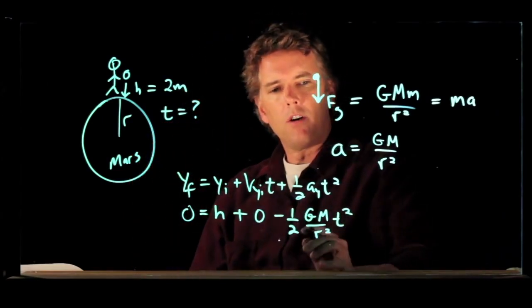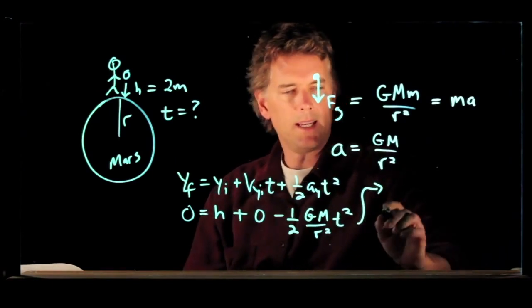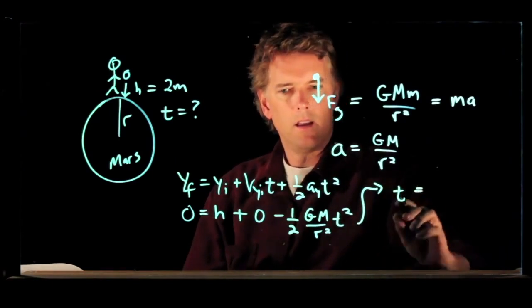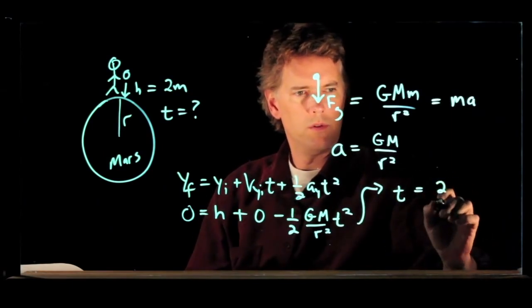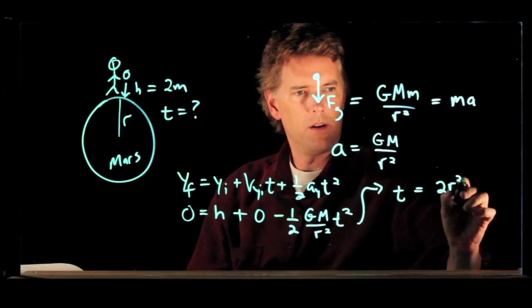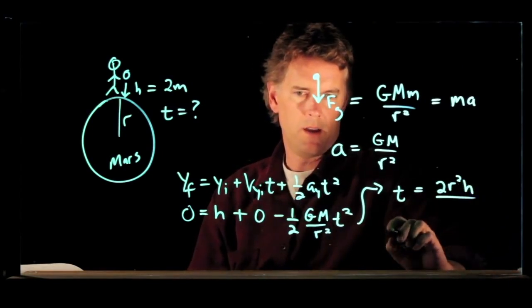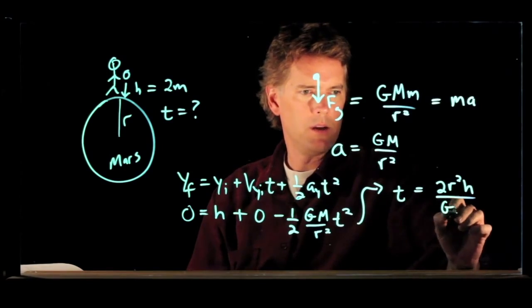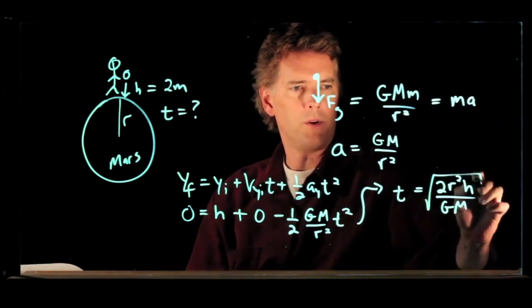And now we can solve this equation for t. We get t is equal to 2 r squared times h divided by big G big M and all of that square rooted.